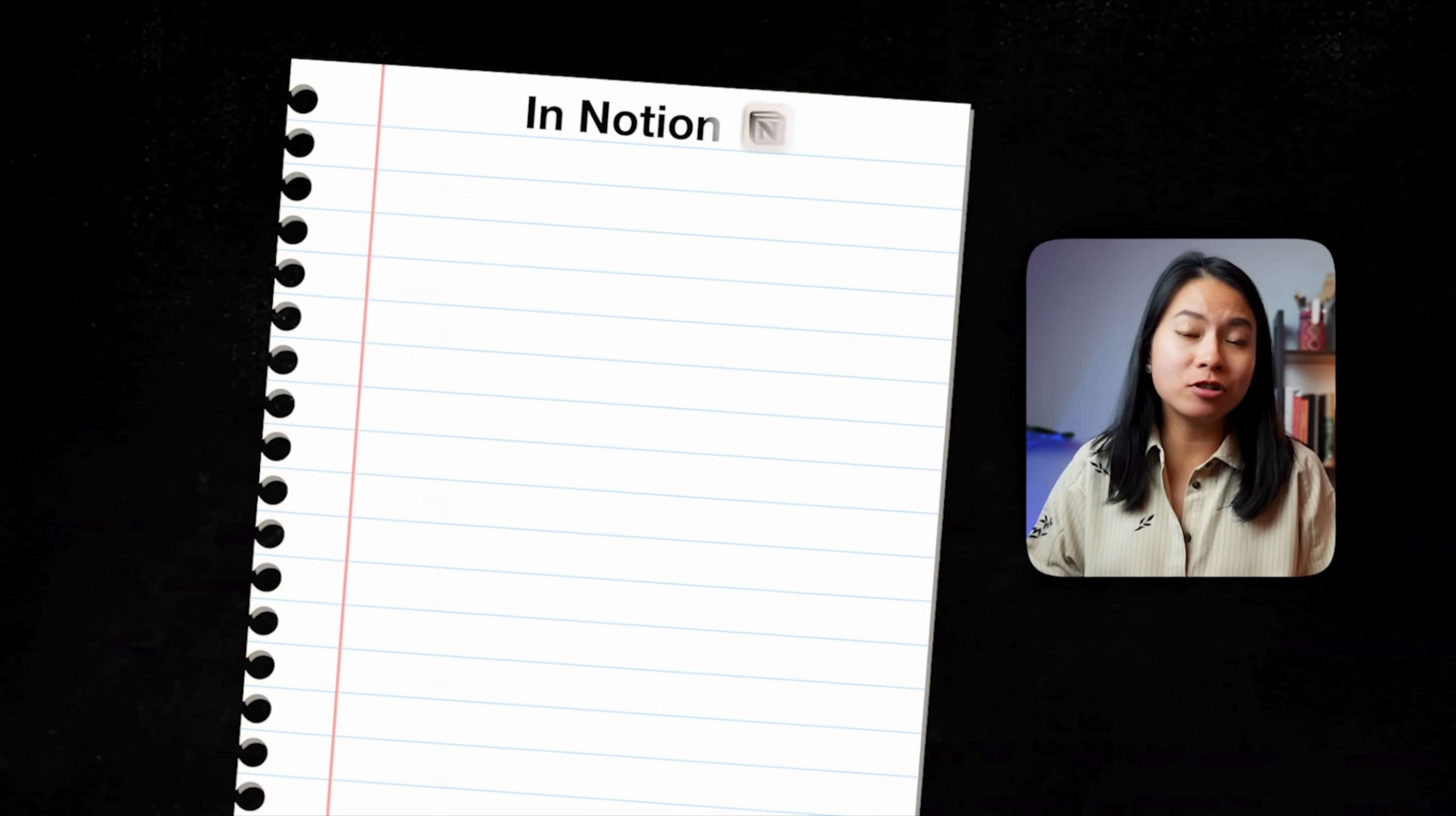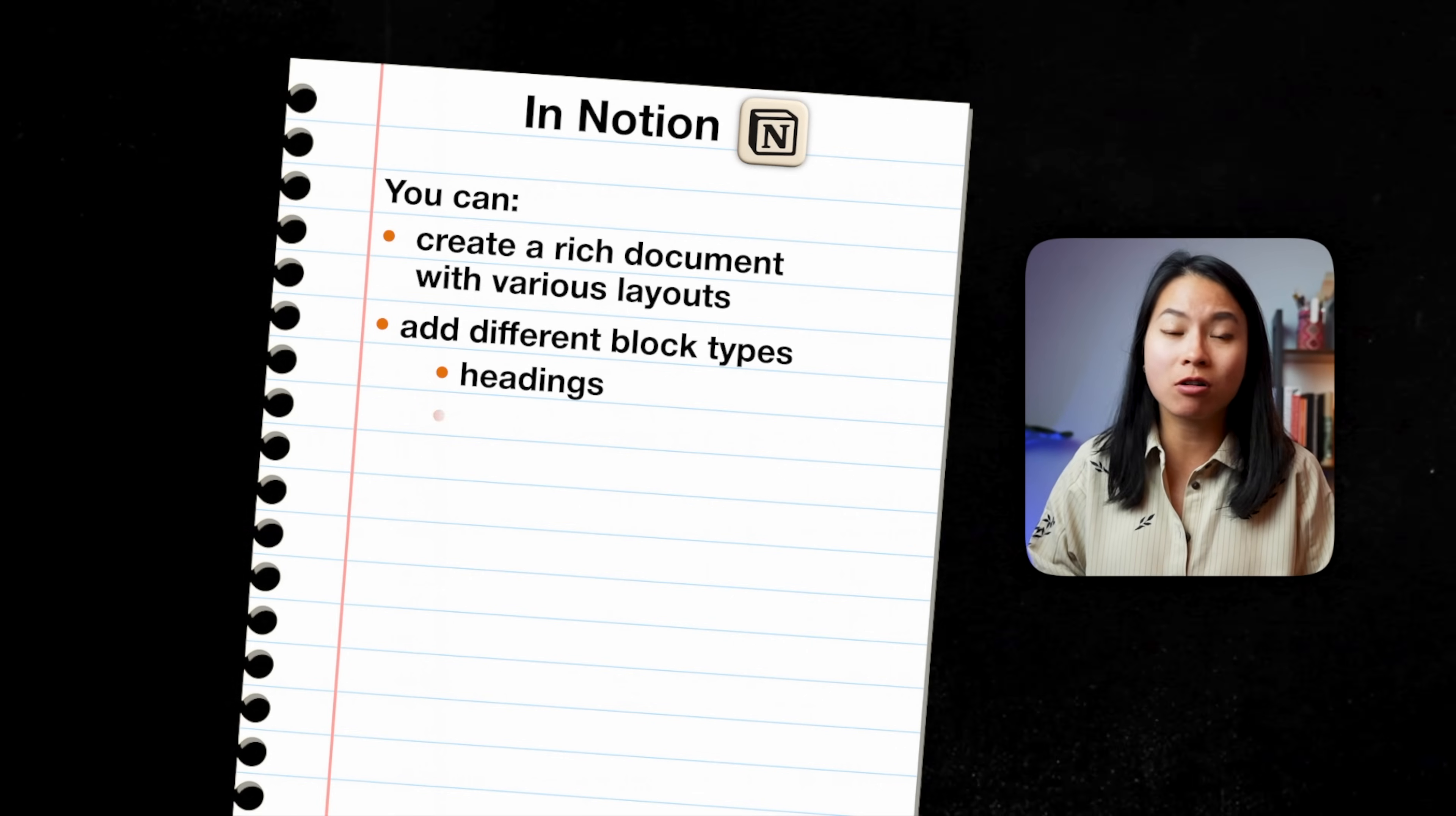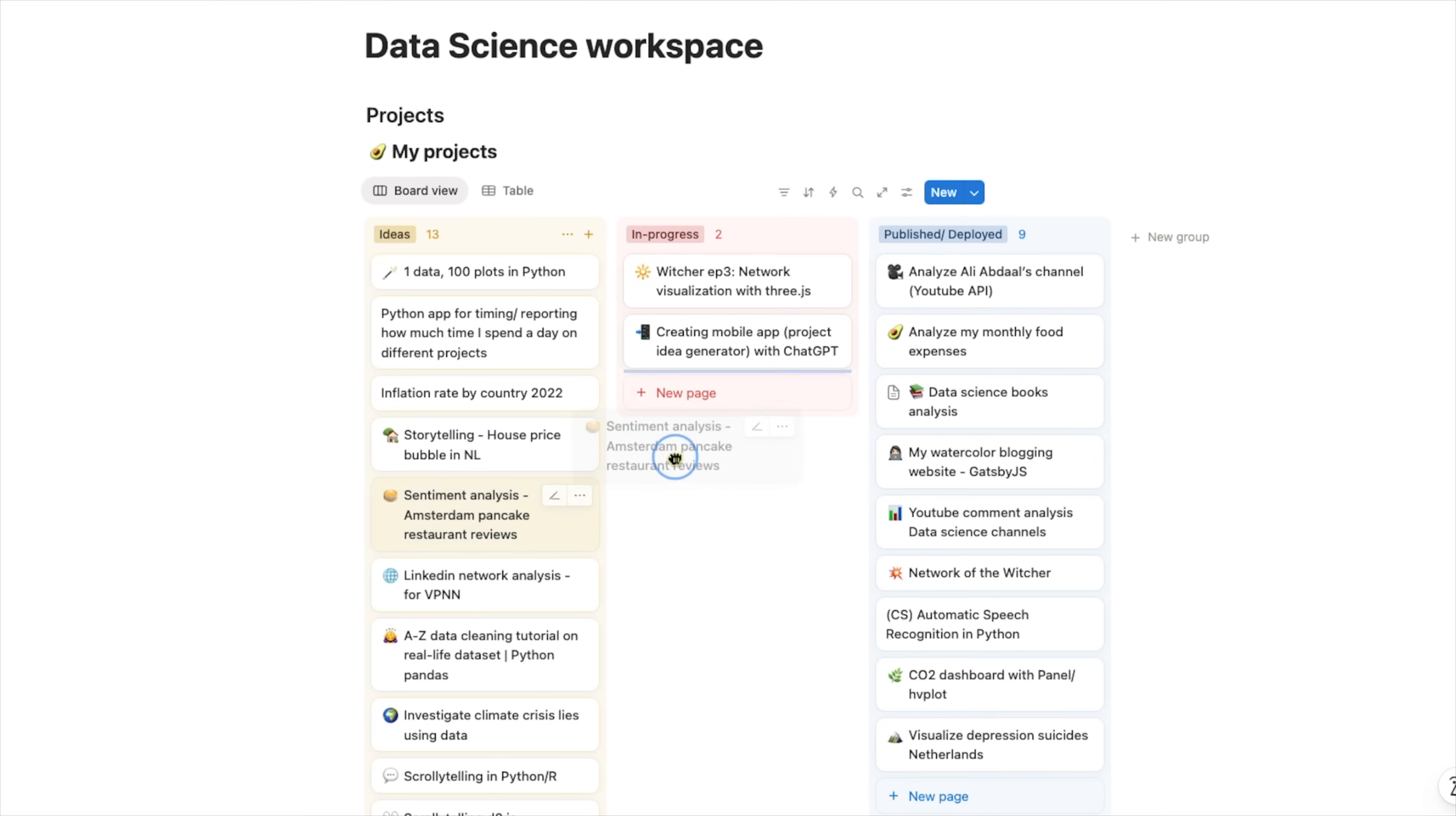When it comes to note-taking tools, my main hub is Notion. In Notion, you can create a rich document with various layouts, add different block types like headings, toggle lists, callouts, code blocks, checklists, and even a database, or even something like a Kanban board if you want to track progress in a project. So it's super versatile. However, if I need something super quick, like I'm in a rush, I'll just open up a note to write some notes and then transfer it to Notion later when I have time.